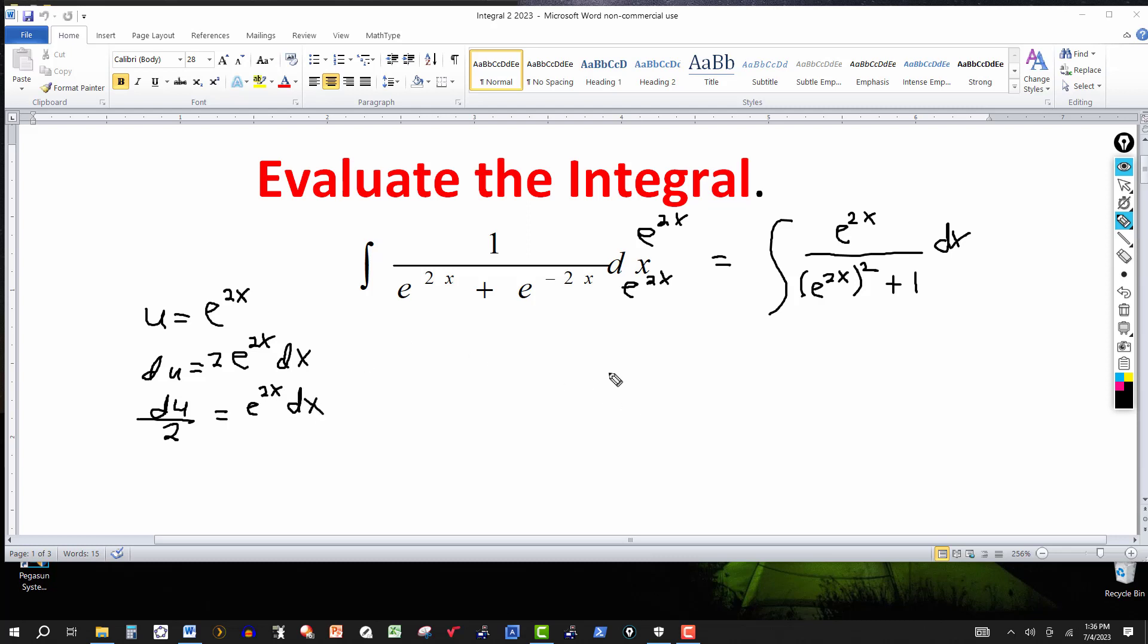Now getting back to this integral, transform this into an integral involving the variable u. Notice here e to the 2x dx can be replaced by du over 2. I'm going to put the 1 half out in front, and e to the 2x dx is du then, with the 1 half out in front.